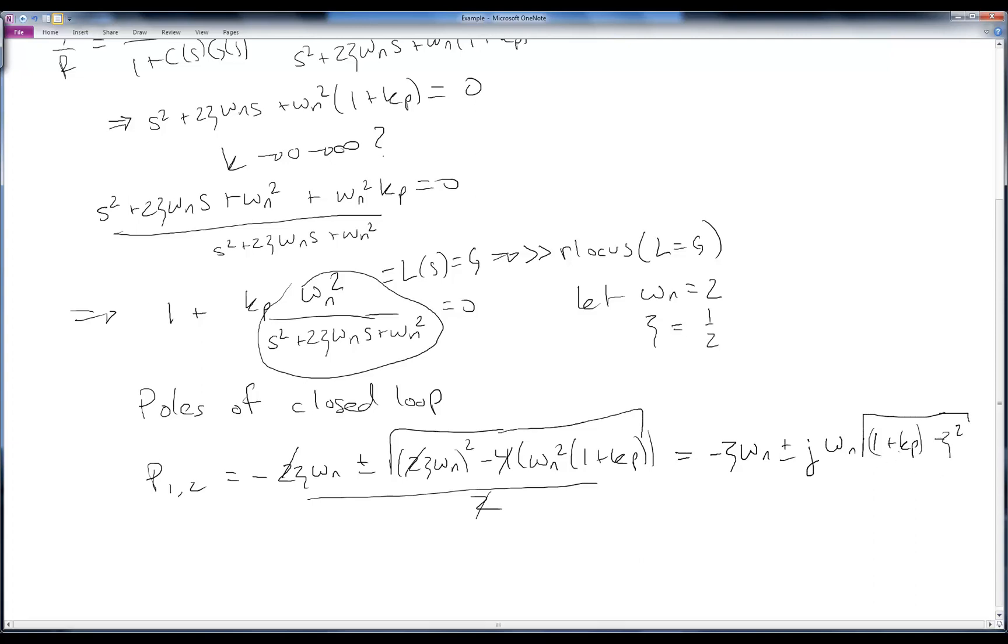Now when kp is zero, we get the open loop poles of a typical mass on a spring with some damping, which is what we found using our locus command. And indeed when kp goes to infinity, we see that only the imaginary part is affected by that and the real part stays constant.